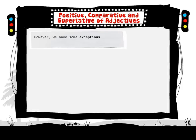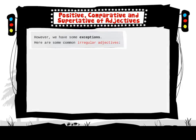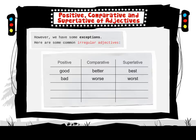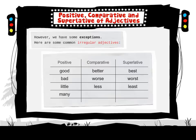However, we have some exceptions. Here are some common irregular adjectives: good, better, best. Bad, worse, worst. Little, less, least. Many, more, most.